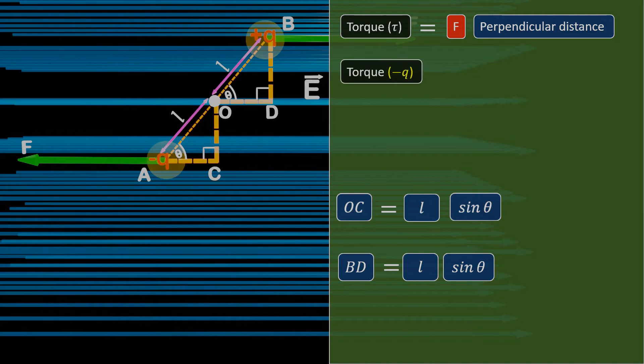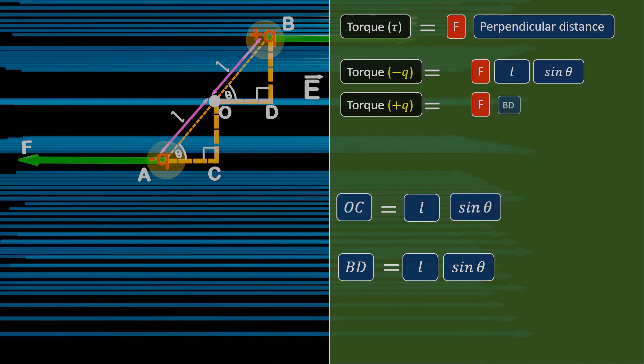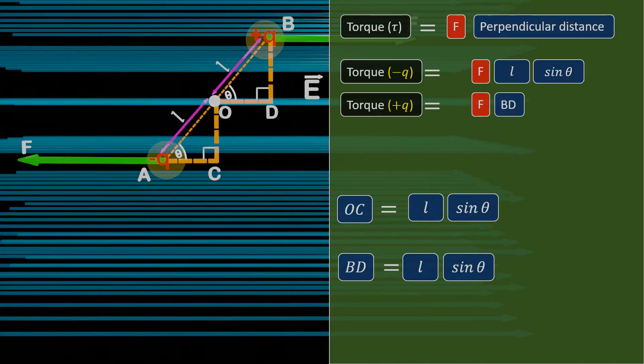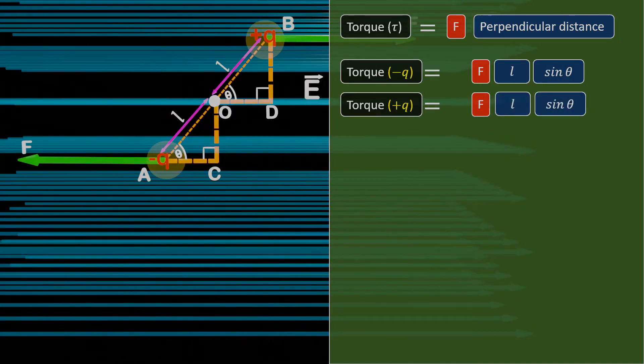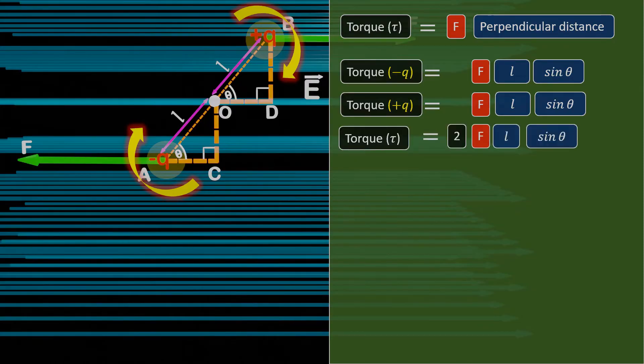Now, the torque due to the negative charge will be equal to the force multiplied by the perpendicular distance OC, and we have calculated that OC is L sin theta. Similarly, the torque due to the positive charge will be force multiplied by the perpendicular distance BD, which is also equal to L sin theta. Since both forces are causing the dipole to rotate in the same direction, that is clockwise, we can add the torque. The total torque will be 2FL sin theta.